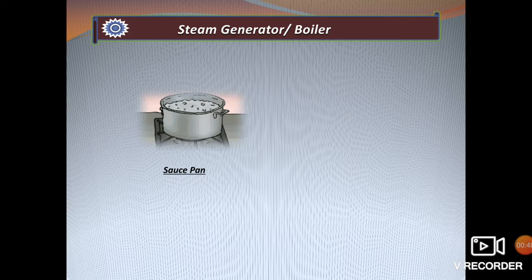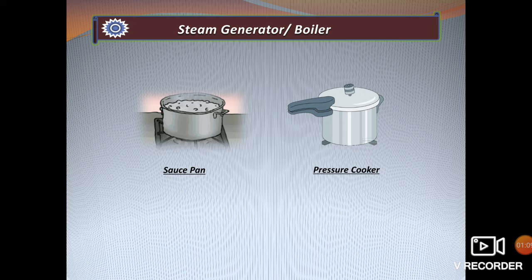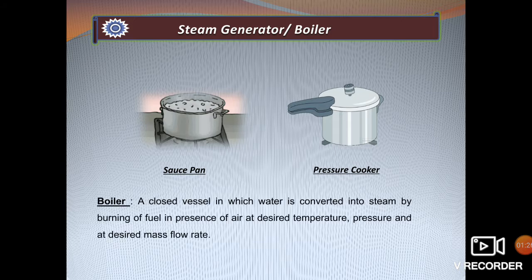To understand what a boiler is, let's consider an example of water boiling in a pan. The boiling point of water at atmospheric pressure is 100 degrees Celsius or 212 degrees Fahrenheit. By pressurizing the boiling system with an airtight seal, we can increase its boiling point — this is how a pressure cooker works. This same concept is used in boilers. A boiler can be defined as a closed vessel in which water is converted into steam by burning fuel in the presence of air, at a desired temperature, pressure, and mass flow rate.